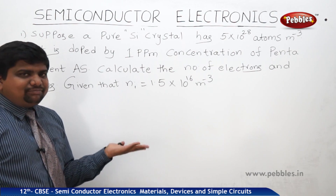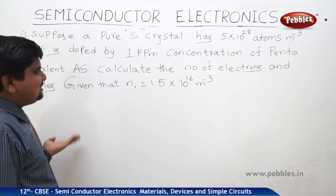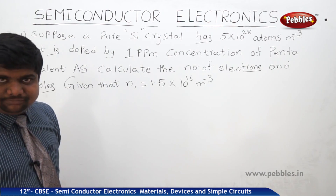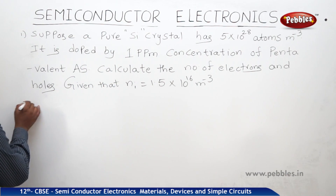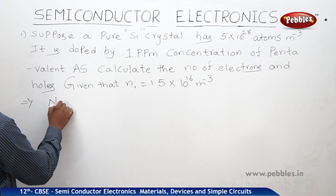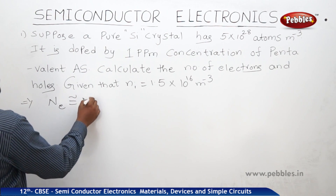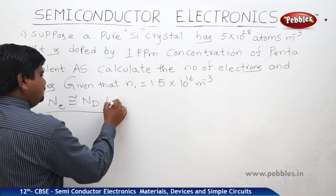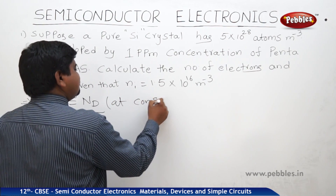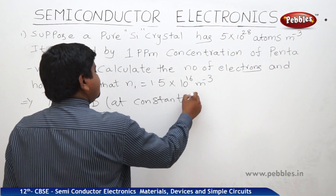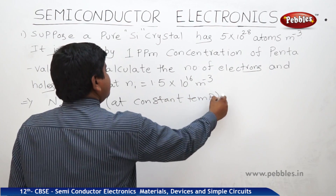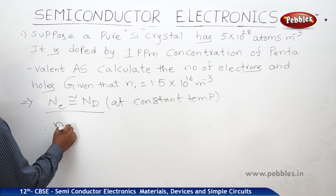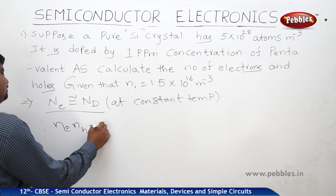This happened at the same temperature. Due to thermal excitations, the number of electrons is equal to the number density. At constant temperature, the number of electrons is equal to the number density. We know that Ne × NH = Ni².